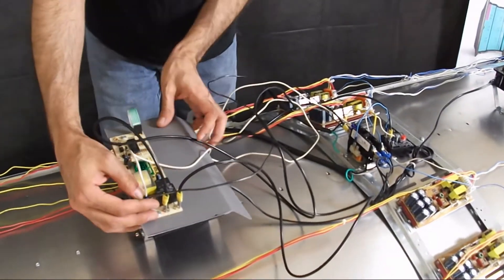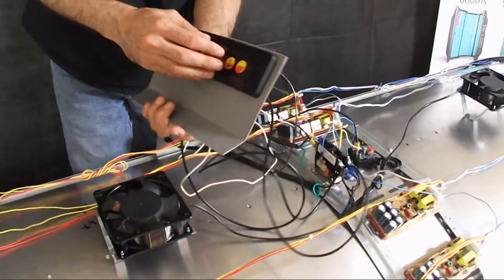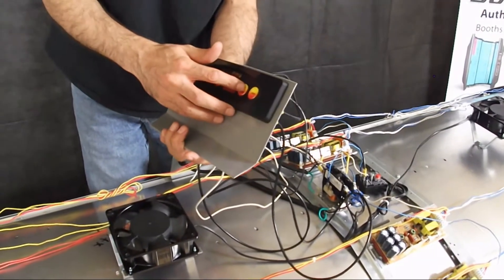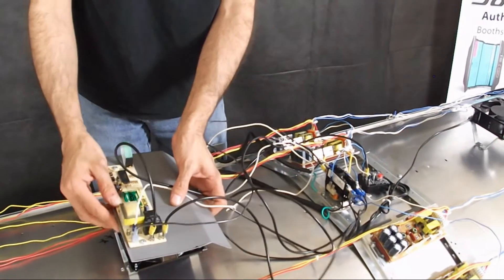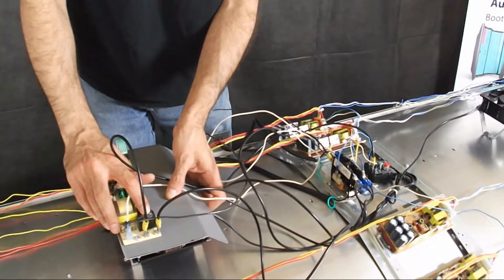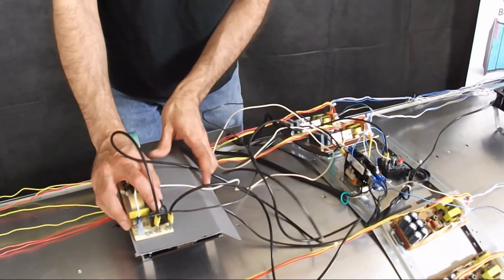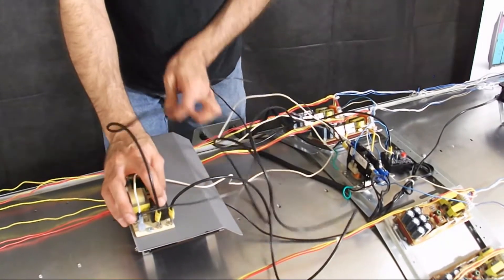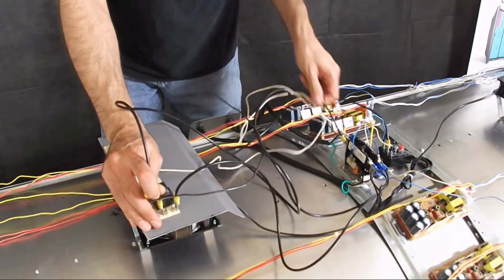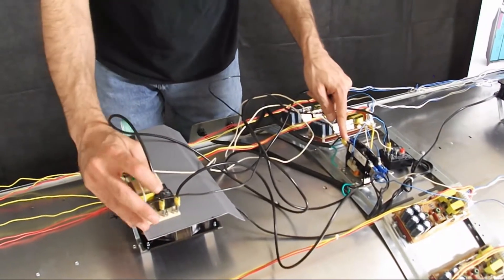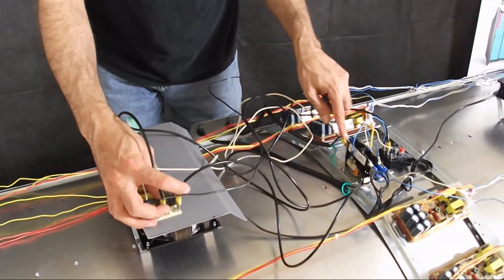So once your timer is engaged by starting it and the display is on and it's counting down, what happens is your relay on your timer closes. When this relay closes, one of these wires comes back to the primary of the contactor and is constantly hot. And this other wire here,